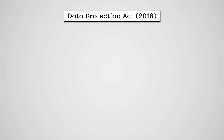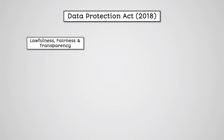There are seven key principles to the Data Protection Act 2018. The first is lawfulness, fairness and transparency. You must have legitimate grounds for collecting and using the data, and do not use it in any way that the individual would not reasonably expect, would have adverse effects on them, or in an unlawful activity.